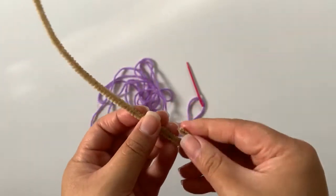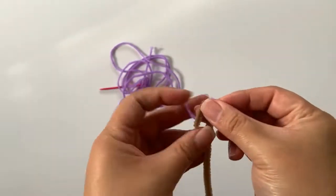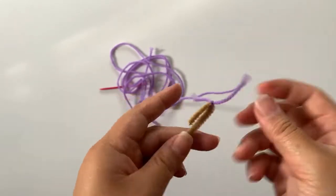Take a pipe cleaner and bend over about one inch at the end and then tie on the loose end of the yarn onto that pipe cleaner. This is how we'll start the bottom of the basket.